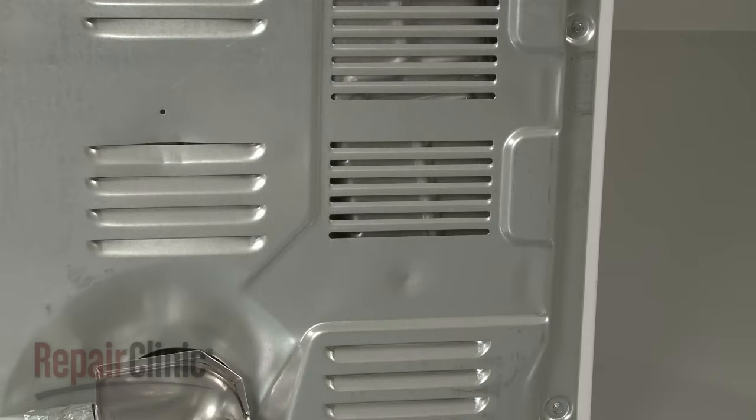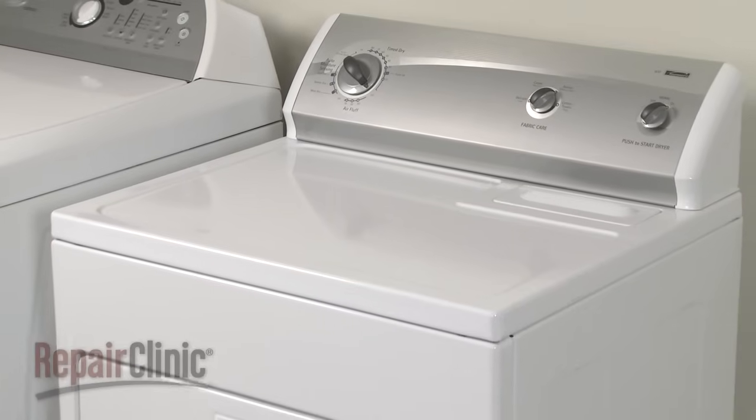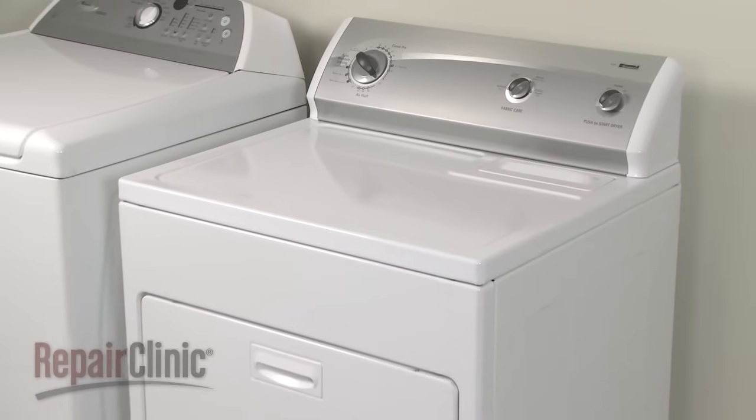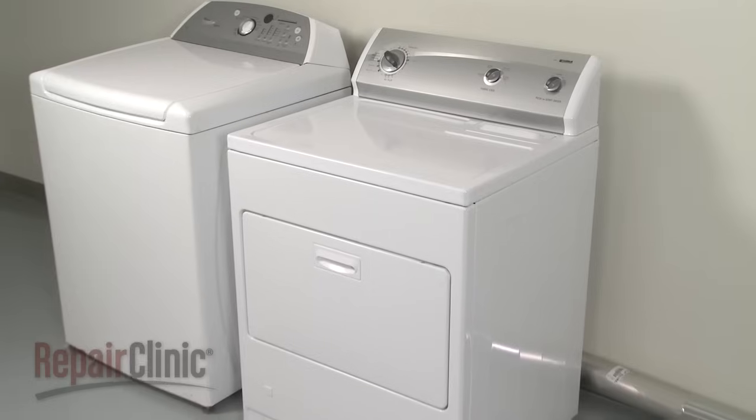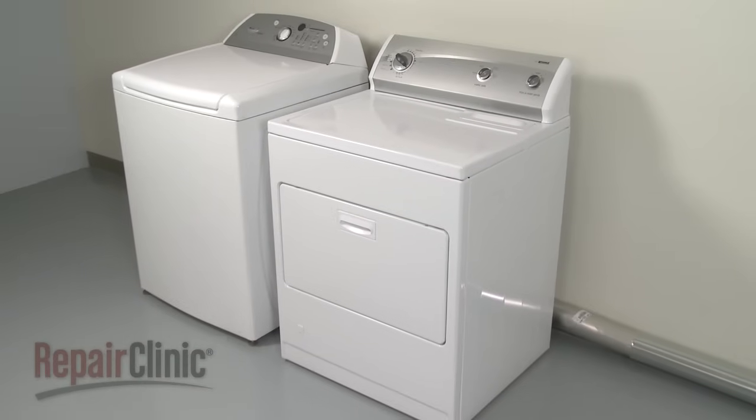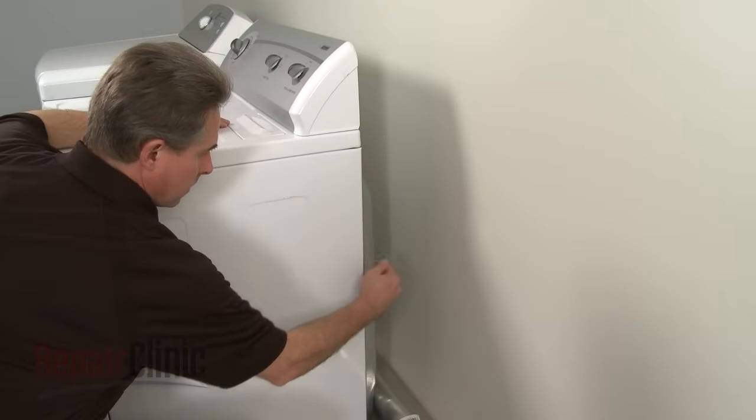For electric dryers, the air is heated by a heating element, and airflow is vital to its proper operation. To ensure your dryer has sufficient air to operate, it should be located in an open, well-ventilated area, and not in a cramped closet or laundry room. For proper airflow, the rear of the appliance should be kept several inches away from the wall.